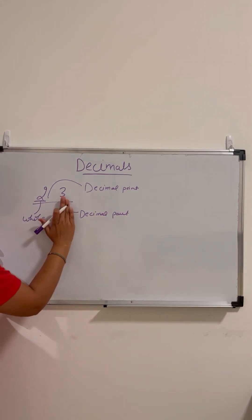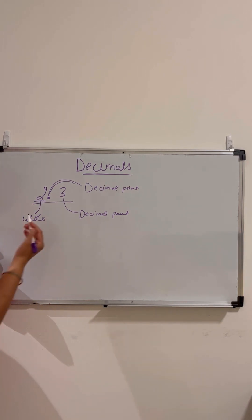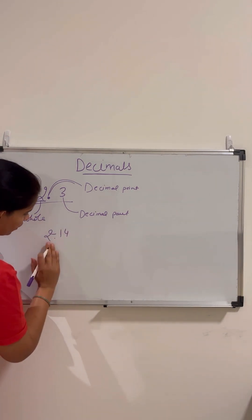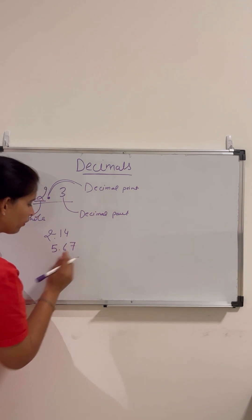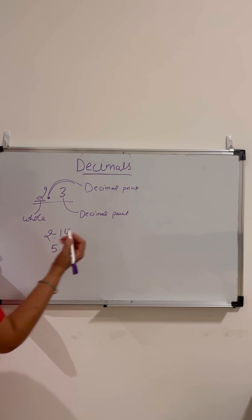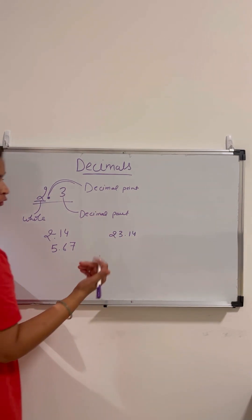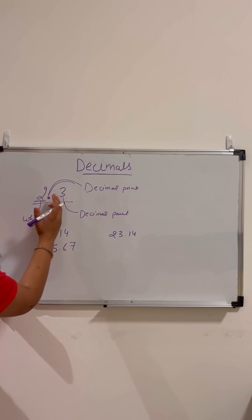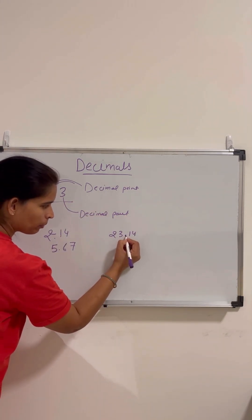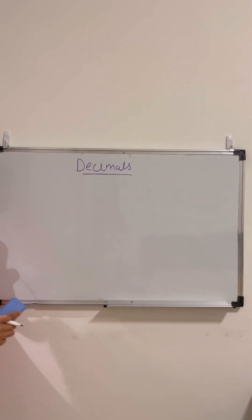This dot is always called the decimal point. So we can say 2.3, or if I have the number 2.14, we say 2.14. Suppose I have to write 5.67, then we say 5.67. Or if I have 23.14, then we say 23.14, or twenty-three and fourteen. The part before the decimal point is the whole part, and the part after is the decimal part.